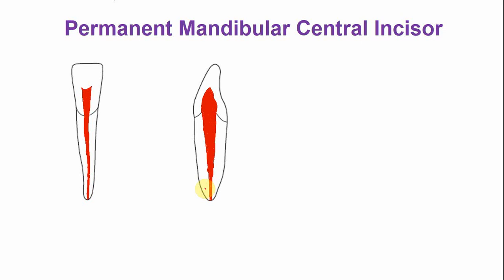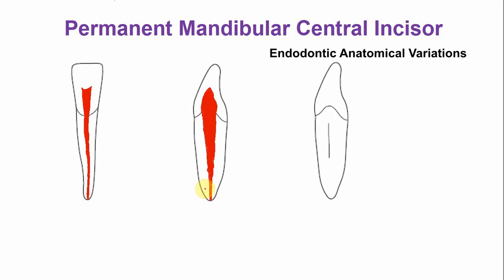Now in the mandibular incisors and canines there are variations in the endodontic anatomy. In the maxillary incisors and canines the variations are very rare, but in the mandibular incisors and canines the variations are a bit common. So what are those variations?